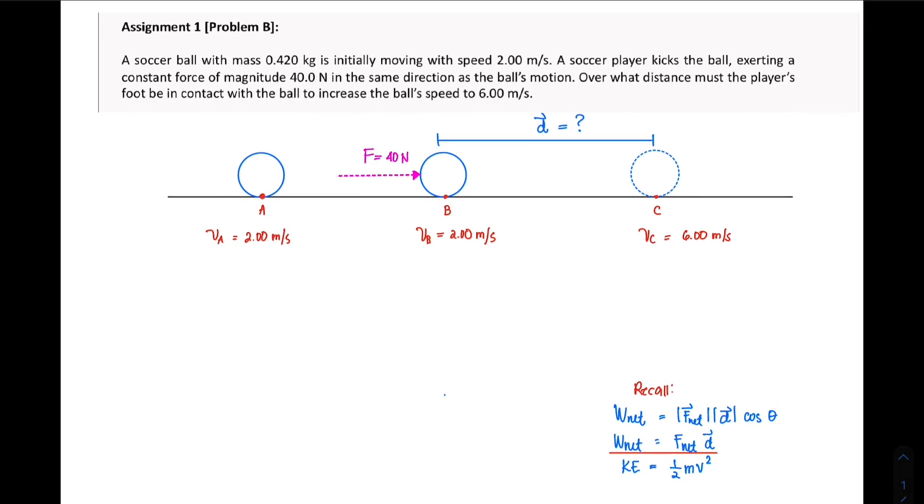We are at the second problem on the application of the work-energy theorem. The problem reads: A soccer ball with a mass of 0.420 kilogram is initially moving with the speed of 2 meters per second, and a soccer player kicks the ball, exerting a constant force of magnitude 40 newtons in the same direction as the ball's motion.